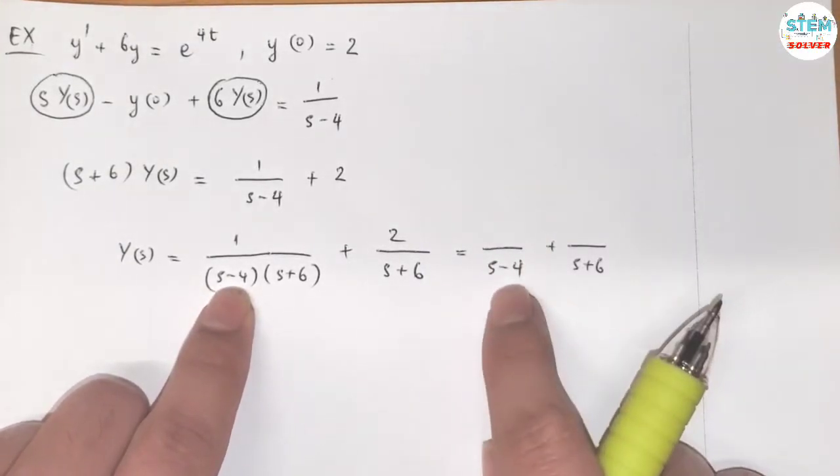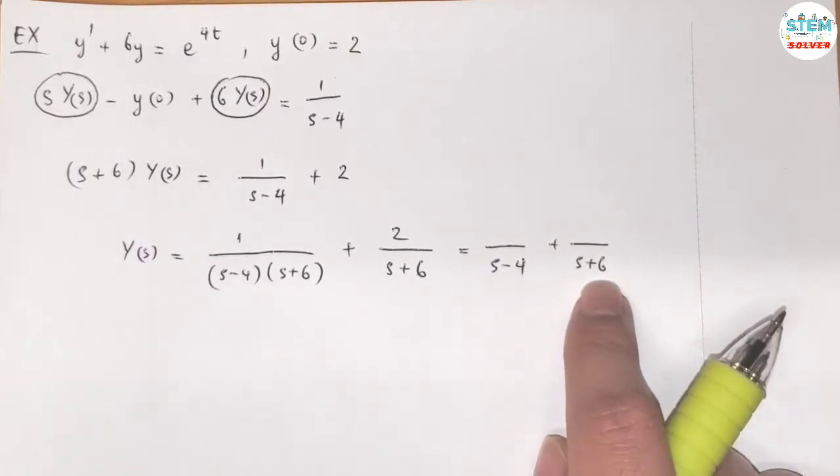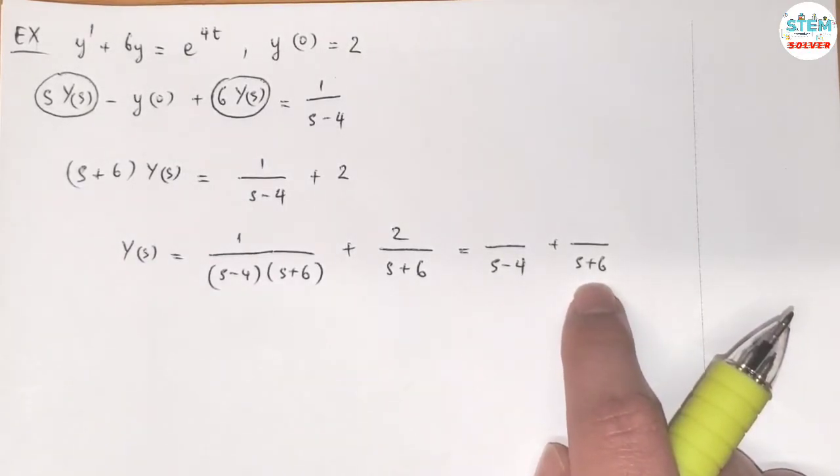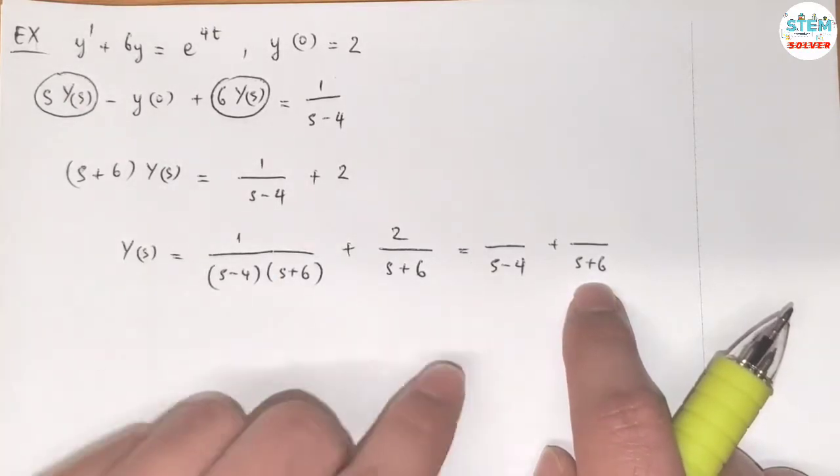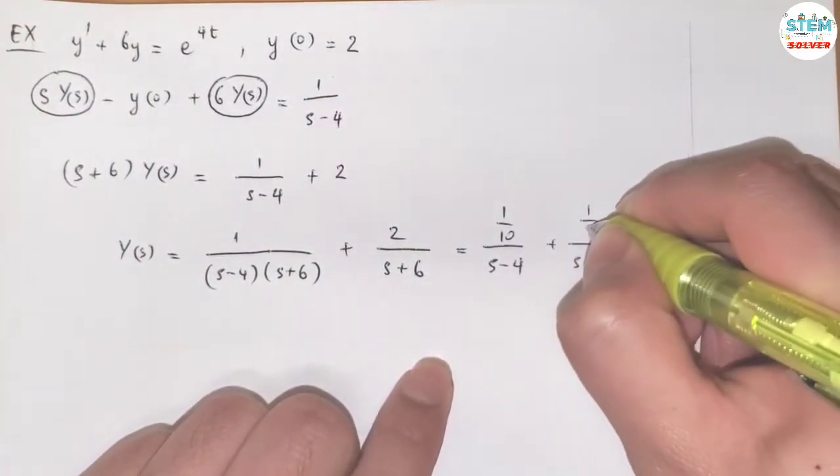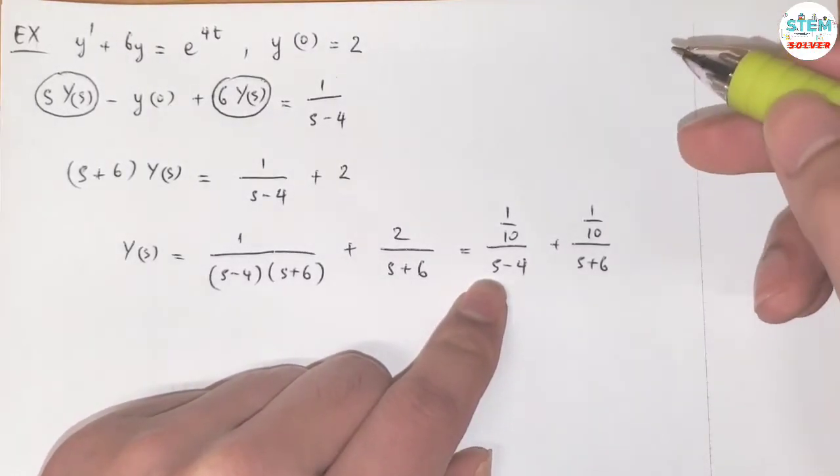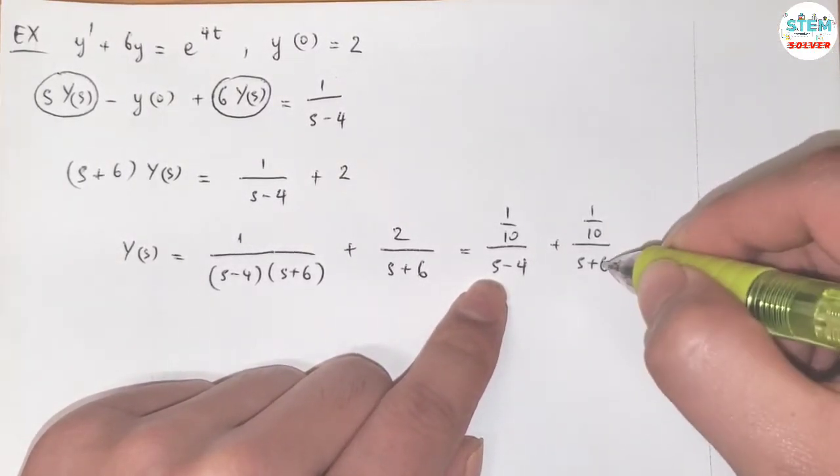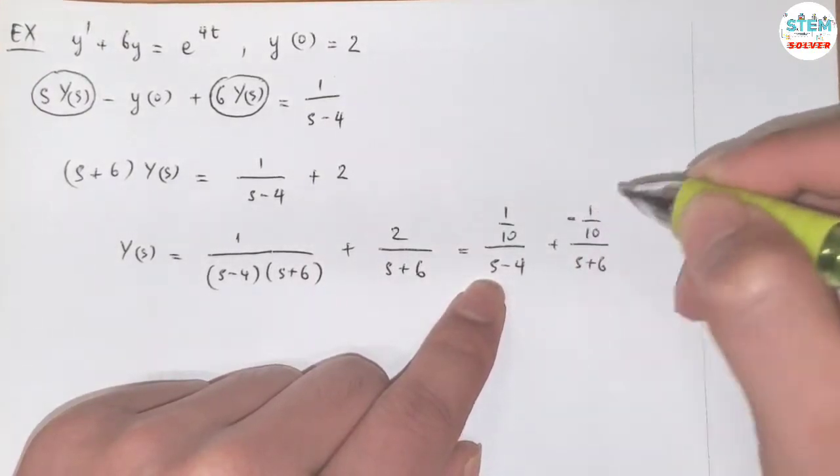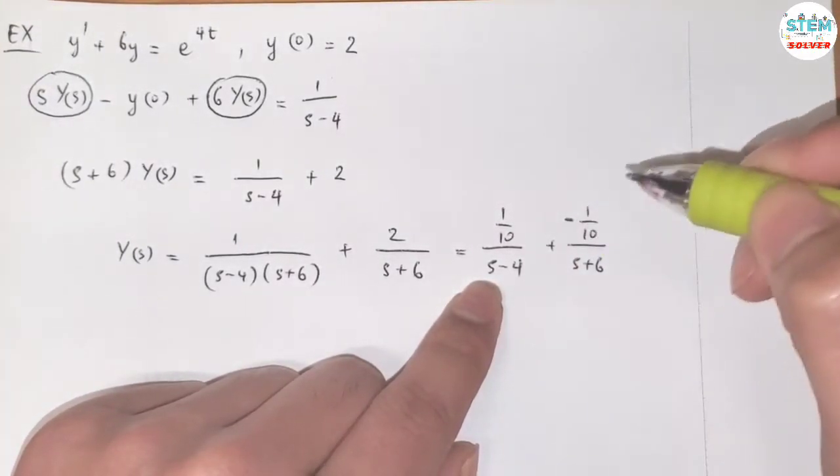So for this one, as you can see, they are off by 10, right? So I'm gonna have 1 tenth on the numerator, so let me write it down. And the next step is to determine which one has the negative sign. As I've experienced, the bigger one will carry the negative sign. So this will carry the negative sign, and then you check it.